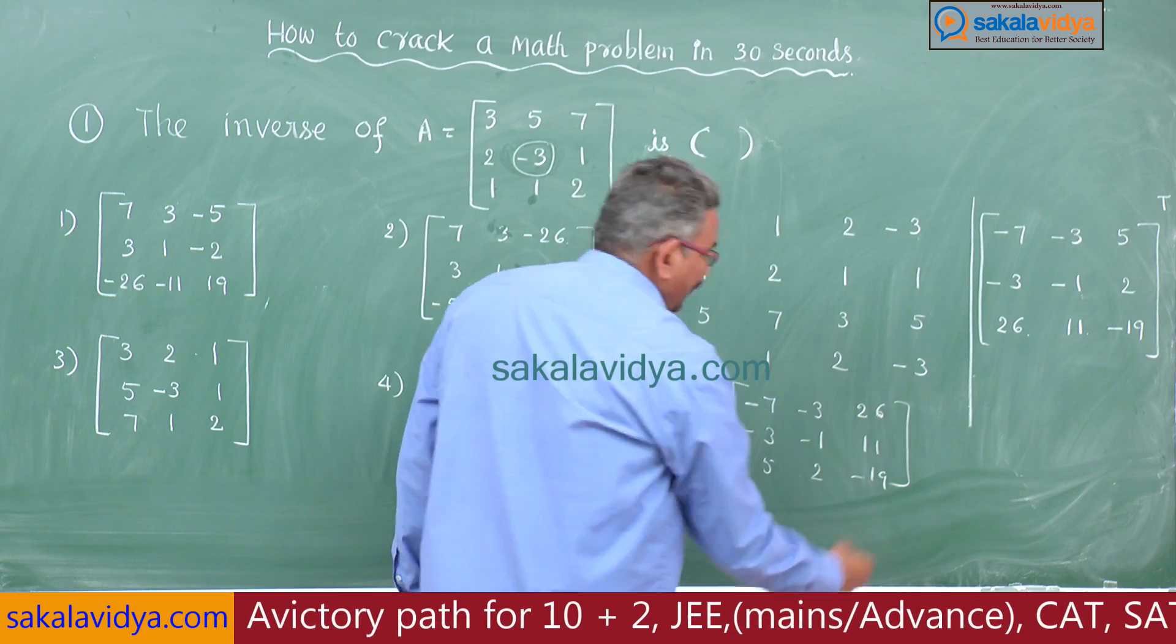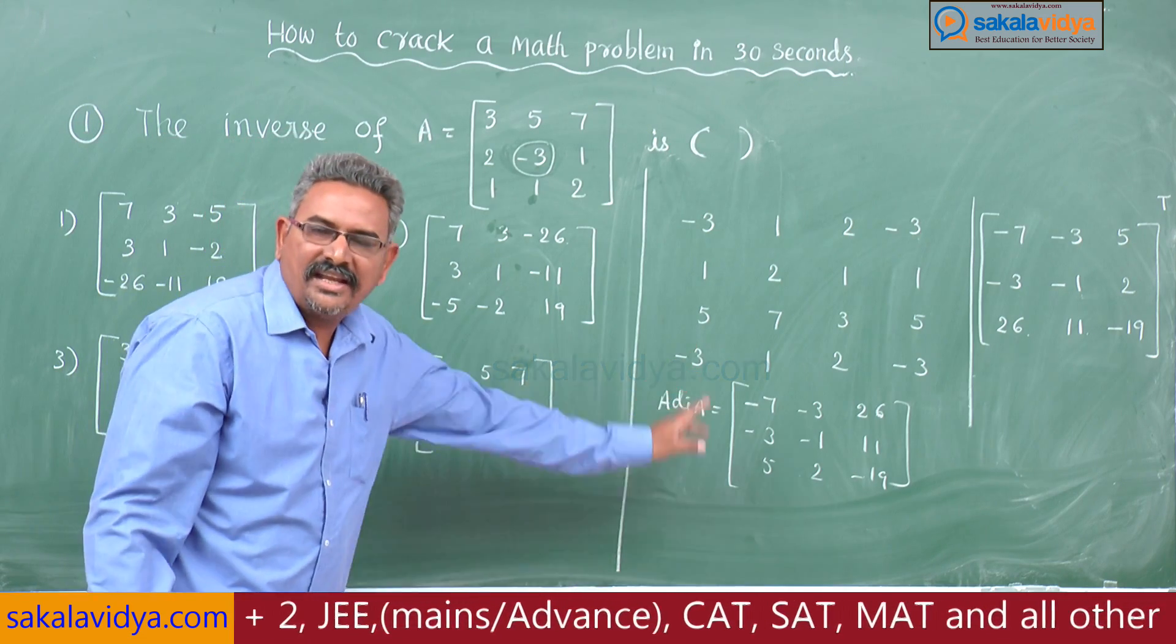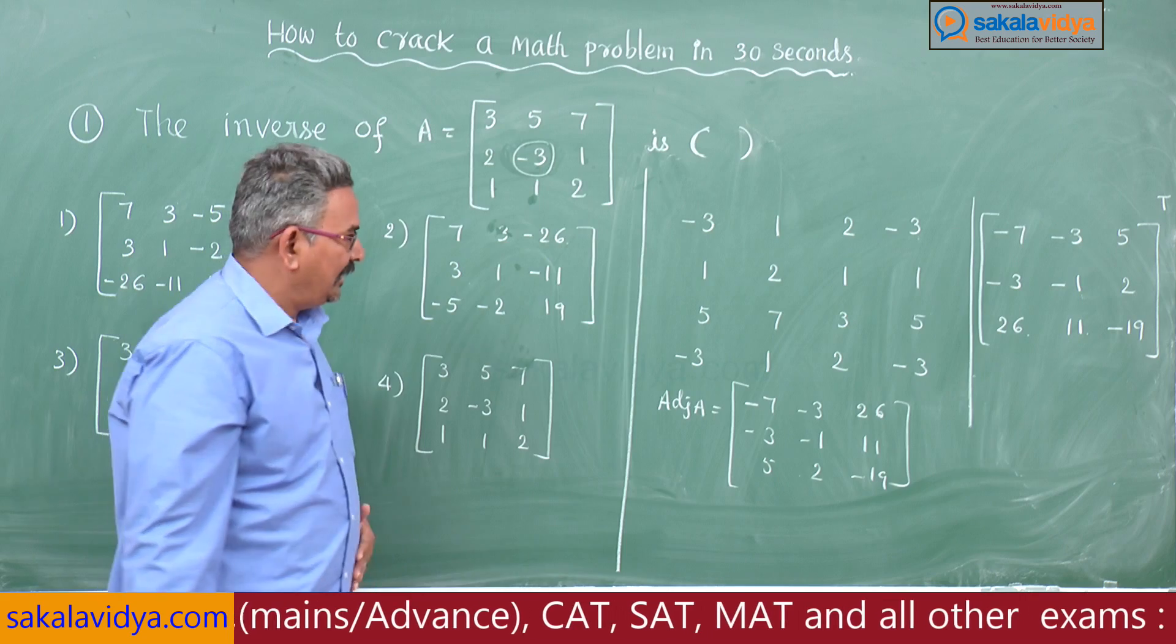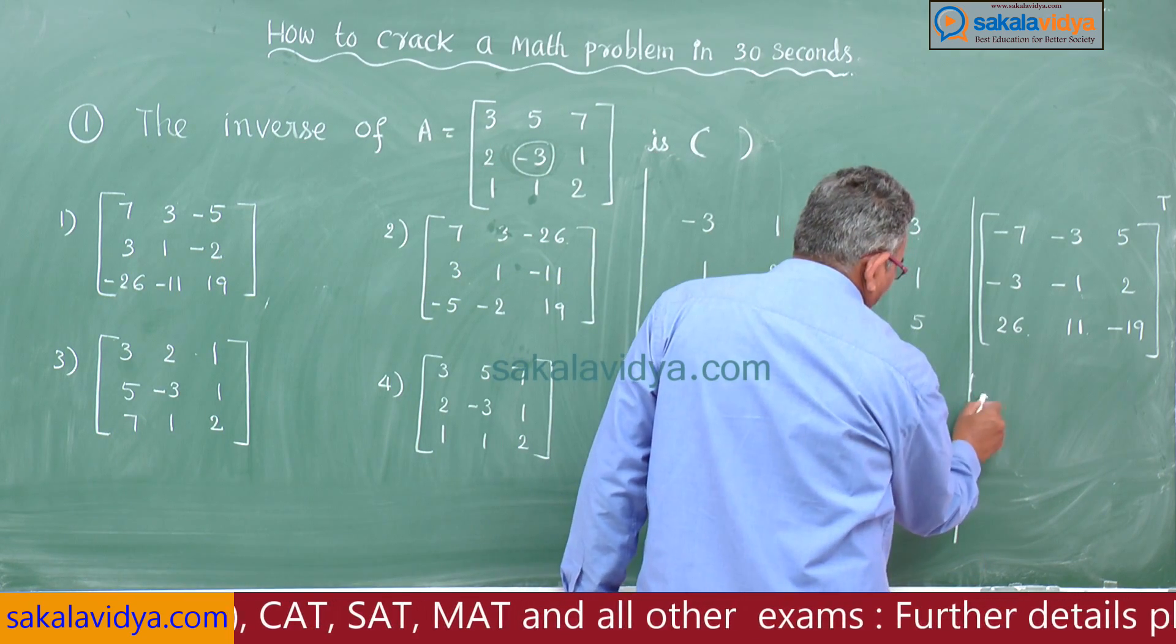But what is our aim? To find out A inverse. To find out A inverse, adj A is multiplied by 1 by det A. Now we have to calculate det A.